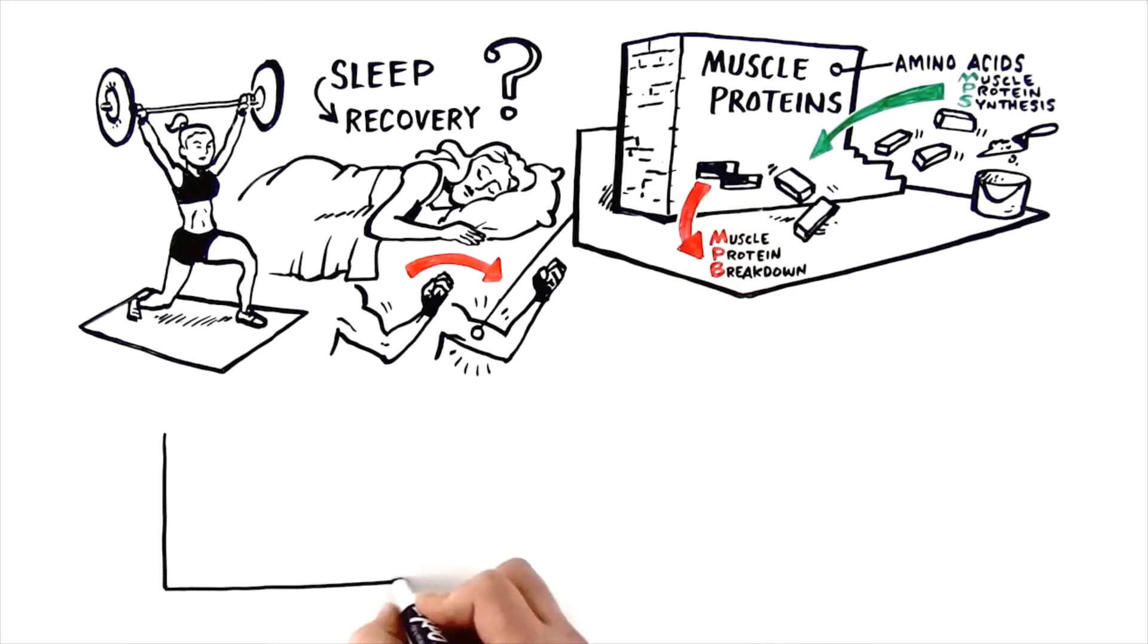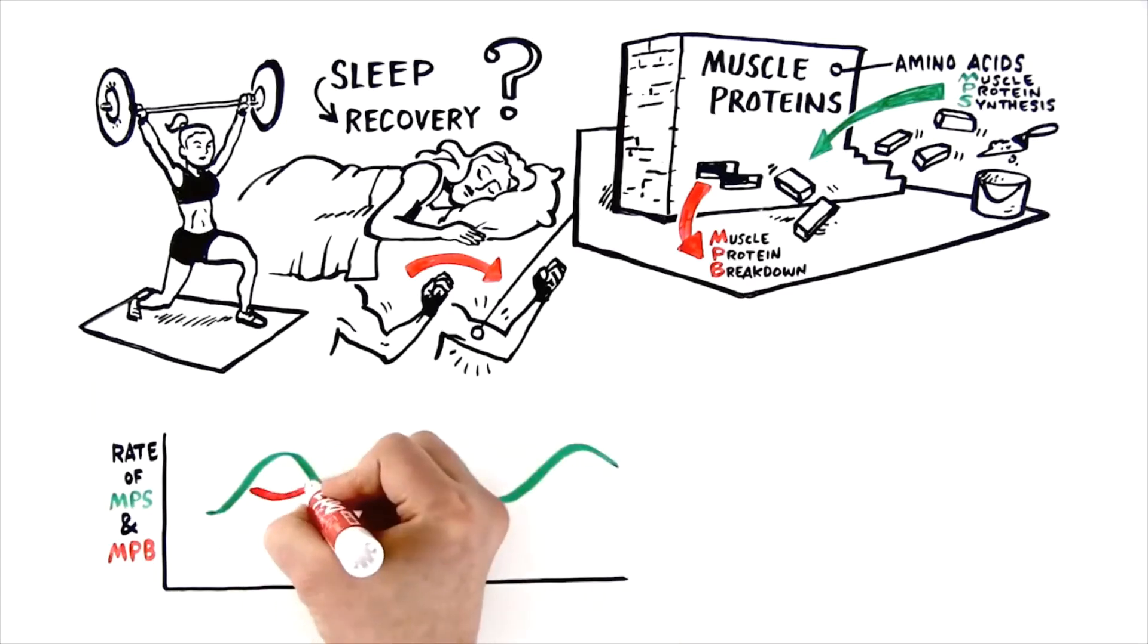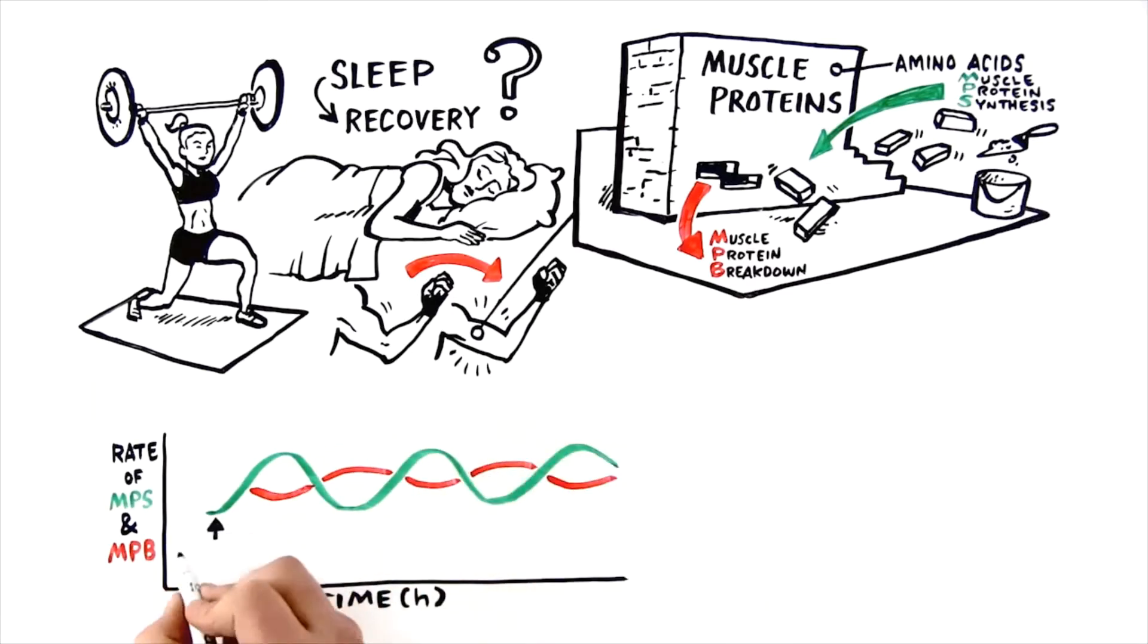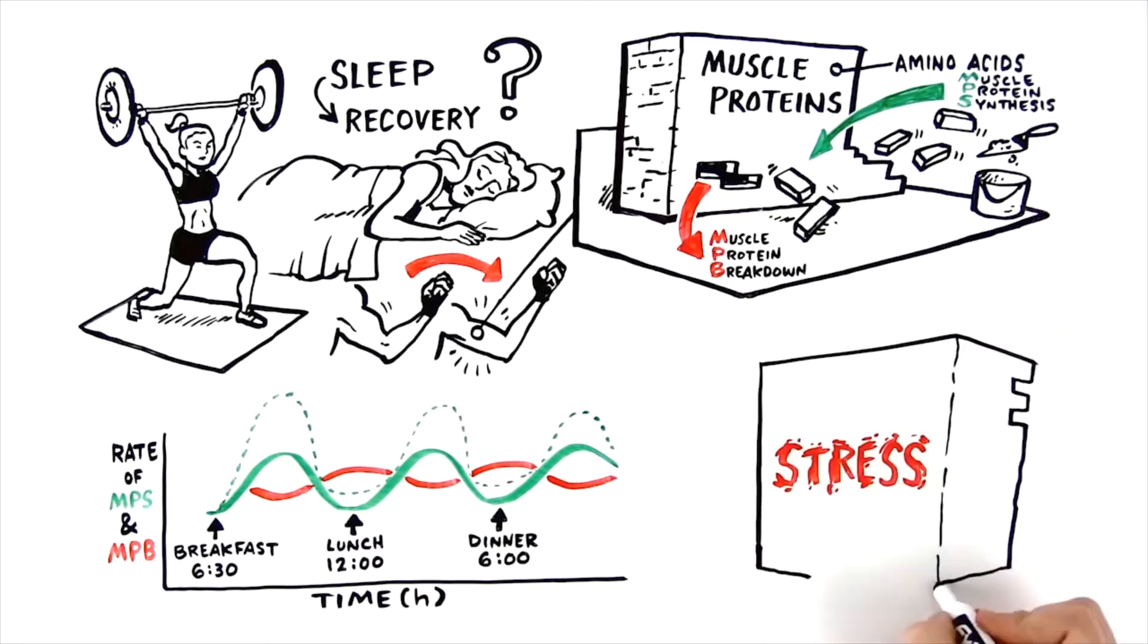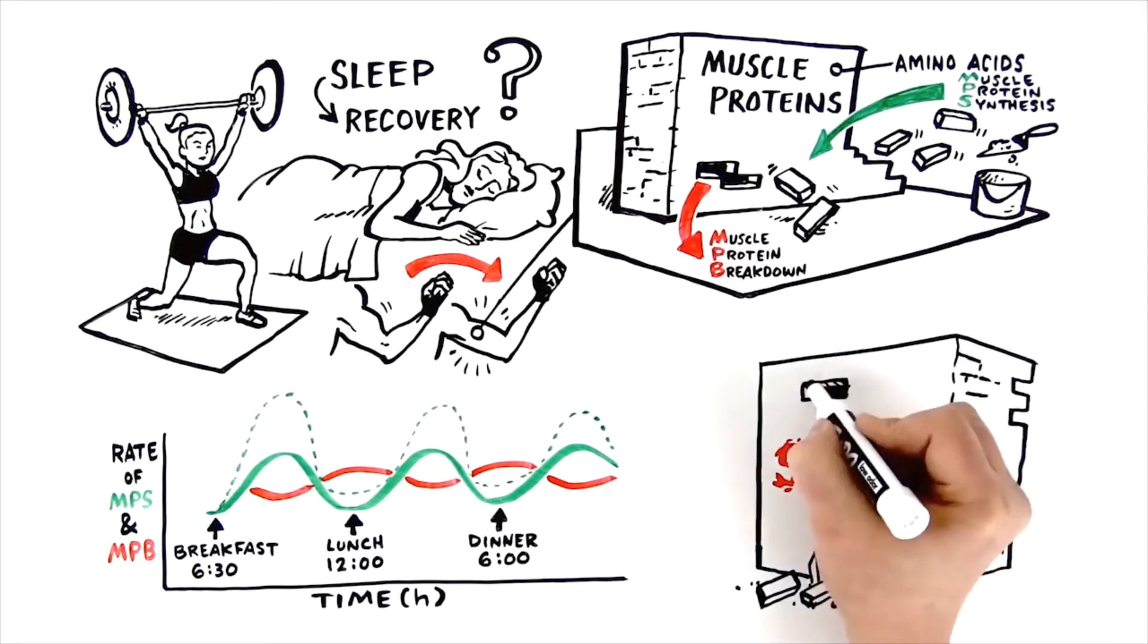These two processes fluctuate throughout the day depending on when you eat. For hard-working athletes, the curves for muscle protein synthesis or MPS and muscle protein breakdown or MPB look different. Because exercise places stress on the muscle, the bricks must be replaced more often.